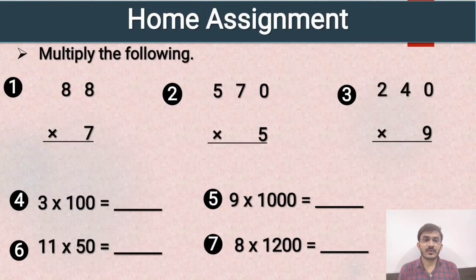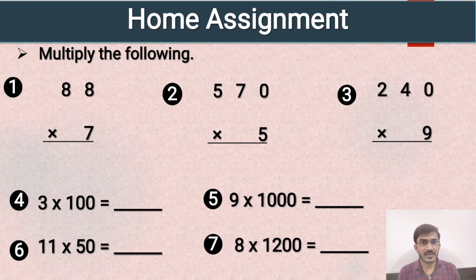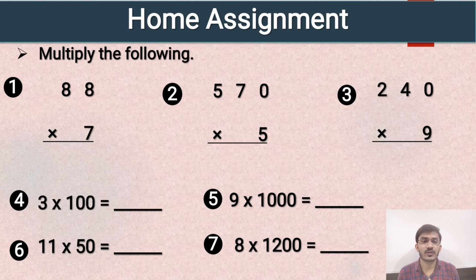Now there are some questions on multiplication that you have to solve by yourself at home. First question: 88 multiplied by 7. Second: 570 multiplied by 5. Third: 240 multiplied by 9. Fourth: 3 multiplied by 100. Fifth: 9 multiplied by 1000. Sixth: 11 multiplied by 50. And the last question: 8 multiplied by 1200.